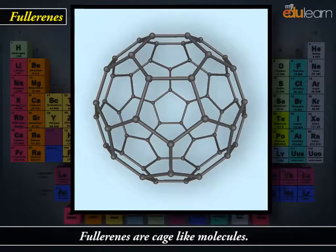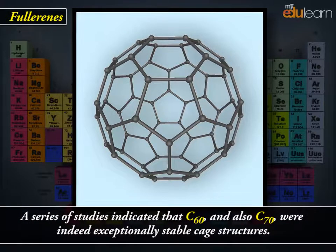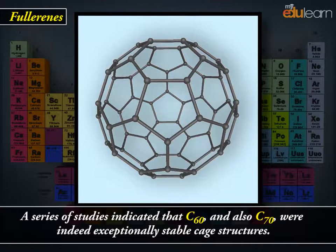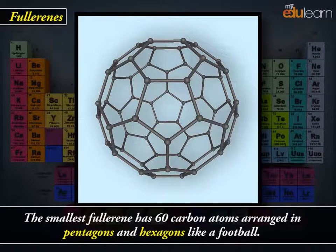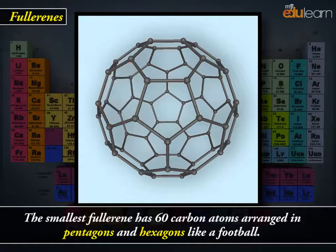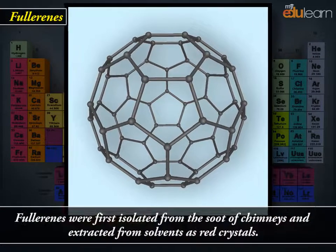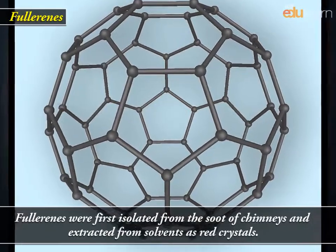Fullerenes are cage-like molecules. A series of studies indicated that C60 and also C70 were indeed exceptionally stable cage structures. The smallest fullerene has 60 carbon atoms arranged in pentagons and hexagons like a football. This is called Buckminster Fullerene. Fullerenes were first isolated from the soot of chimneys and extracted from solvents as red crystals.